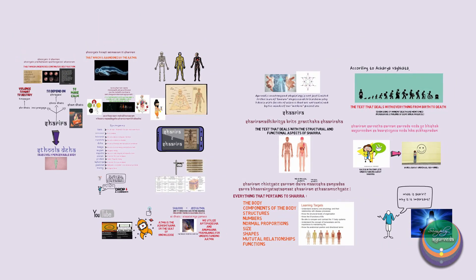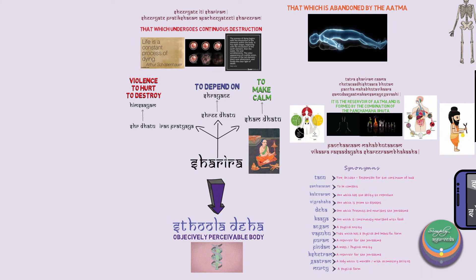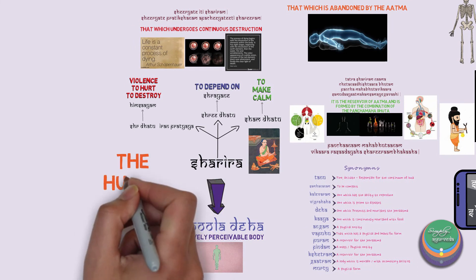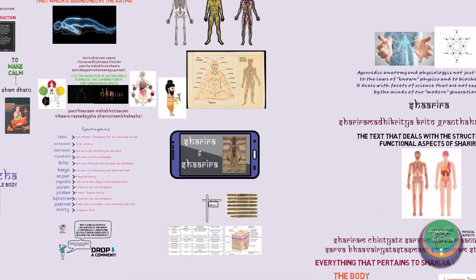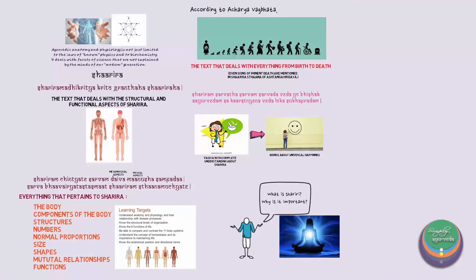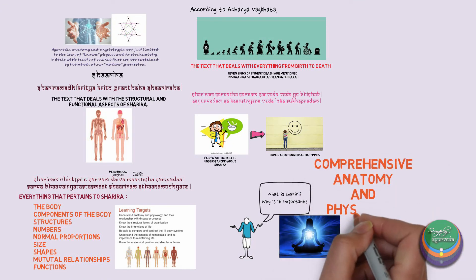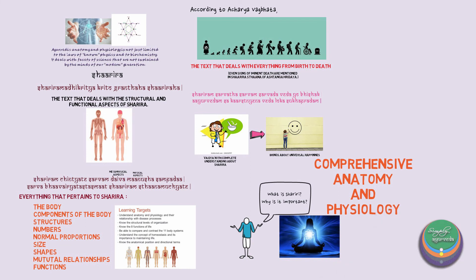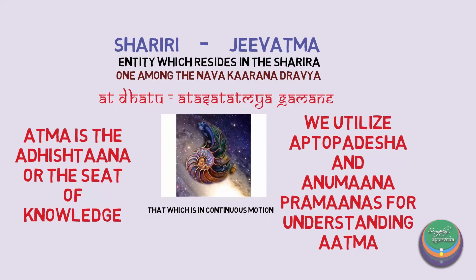To summarize the final take-home points: Sharira is nothing but the human body made of the Pancha Mahabhuta Vikara, acting as the Ashraya for Atma or the Chetana. Sharira Sthana is the text or the science which deals with the study of Sharira — the human body in detail — including the anatomical and physiological aspects, from Garbhavastha to Marana.